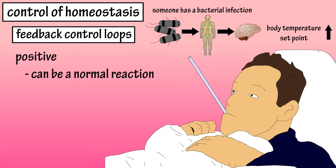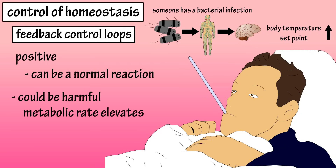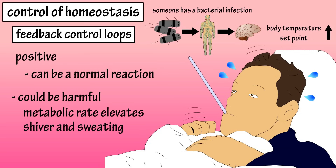However, in some instances, it could create a harmful positive feedback loop, where metabolic rate is elevated and the body is producing heat faster than it can get rid of. So a person may be shivering and sweating at the same time. And if body temperature increases above 108 degrees Fahrenheit, or 42 degrees Celsius, it could be extremely dangerous and even fatal.